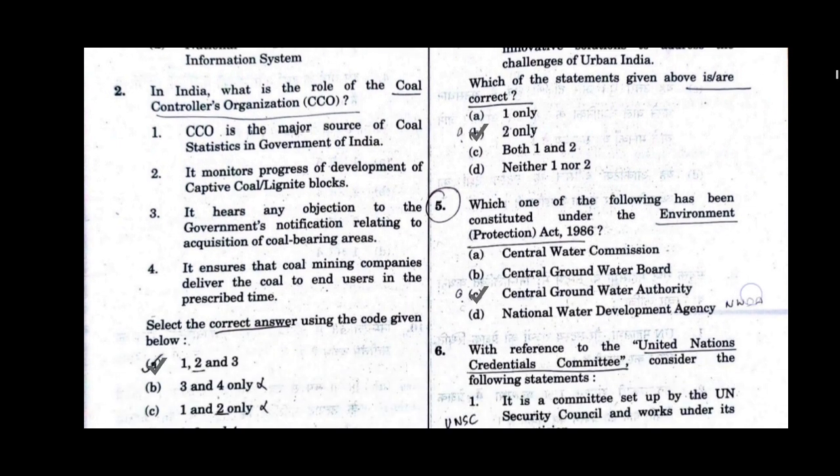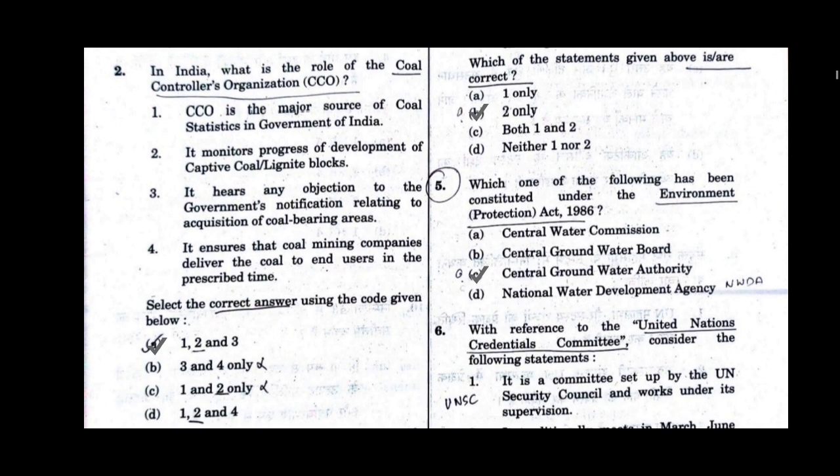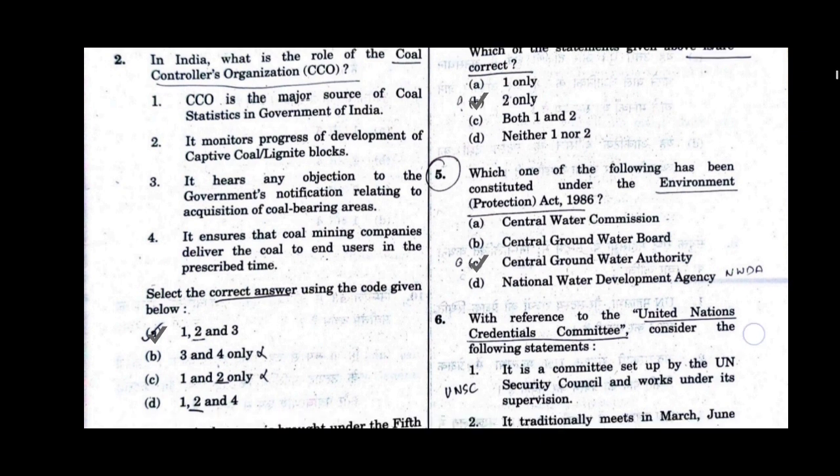Question number 2. In India, what is the role of the Coal Controllers Organization, CCO? The correct answer will be option A: 1, 2 and 3.